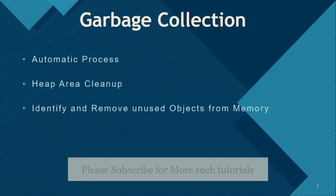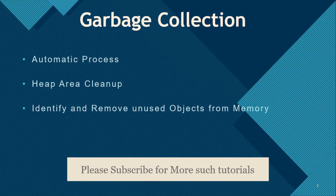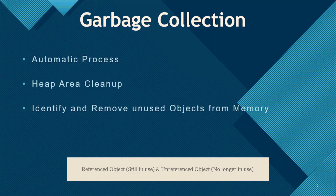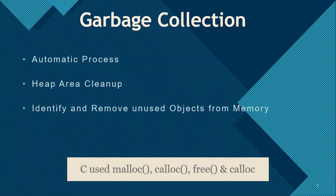So what is garbage collection? Garbage collection is an automatic process of looking at heap memory, identifying which objects are in use and which are not, and deleting the unused objects. An in-use or referenced object means that some part of your program still maintains a pointer to that object. An unused or unreferenced object is no longer referenced by any part of your program, so the memory used by an unreferenced object can be reclaimed.